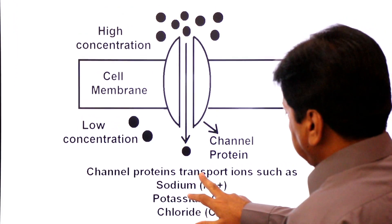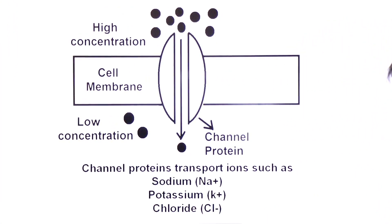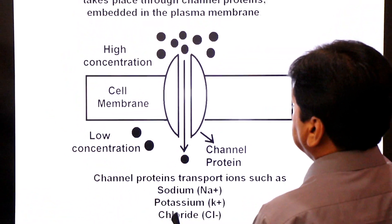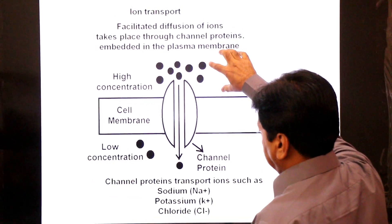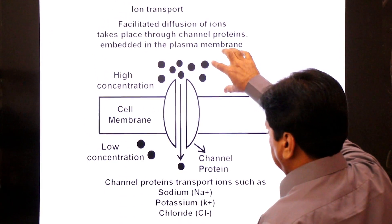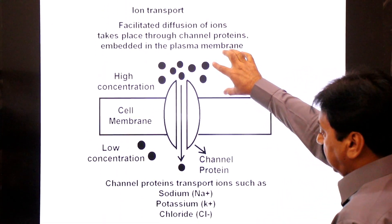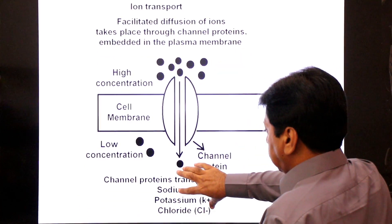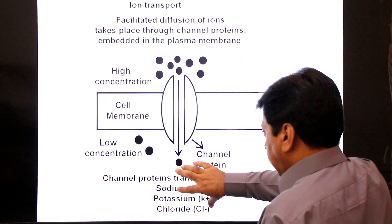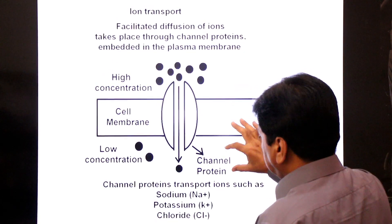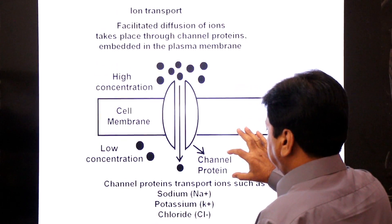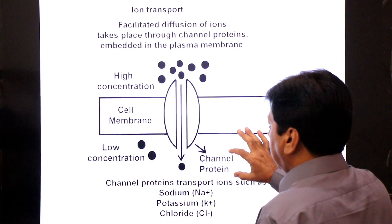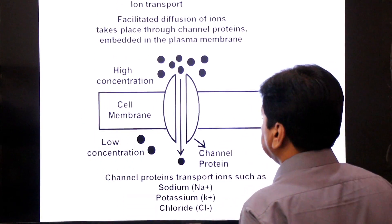Channel proteins transport ions such as sodium ions, potassium ions, and chloride ions. These ions move from higher concentration to lower concentration across the plasma membrane through specific channel proteins — a channel protein for sodium ions, a channel protein for potassium ions, and a channel protein for chloride ions.